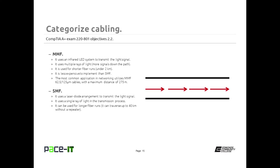Single-mode fiber uses a laser diode arrangement and, even though the light path appears straight, it actually bounces down the cable as a single ray of light. It's used for longer runs. At the time this presentation was created, the maximum distance was up to 40 kilometers, but more recent developments have achieved single-mode fiber traversing 70 kilometers.